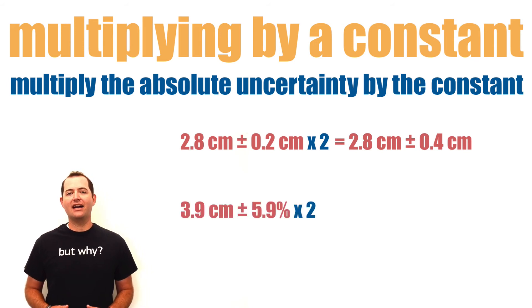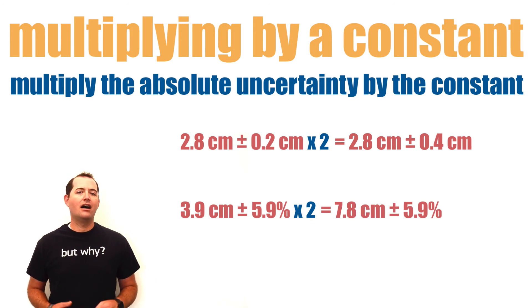However, if our measured value has a relative uncertainty, we will make no change to that percentage. Our relative uncertainty will remain the same, and we will just multiply our measured value by the constant.